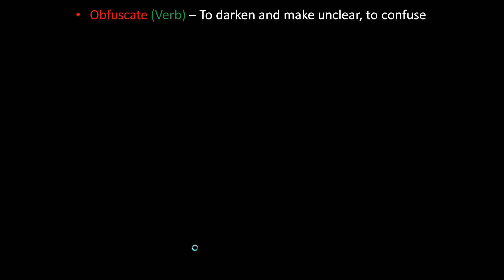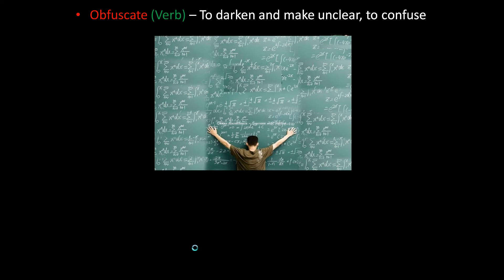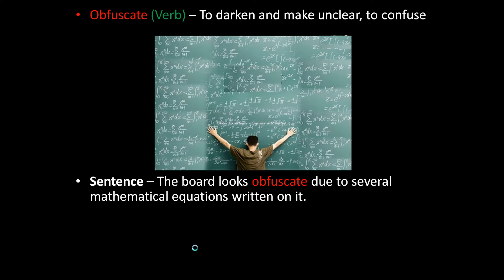The next word is obfuscate. Obfuscate means to darken and make unclear, to confuse. In the photo, a word is obfuscated by several mathematical equations, making it unclear and very confusing. The sentence is: the word looks obfuscated due to several mathematical equations written on it — that is, the word looks very confusing.